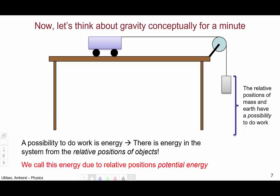In other words, there is energy in the system solely from the relative positions of the objects of the mass and the earth. We call this energy due to the relative positions potential energy. Note, the mass can't have potential energy by itself. I have to think about the relative position of the mass and the earth. It's the two objects together that give me the idea of potential energy.